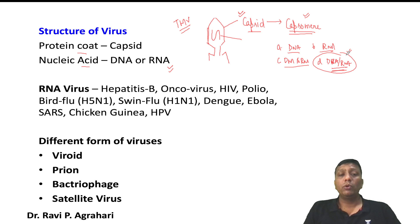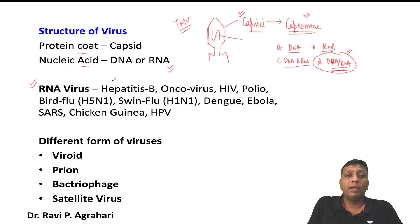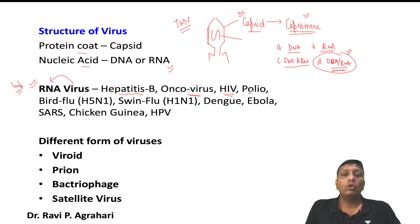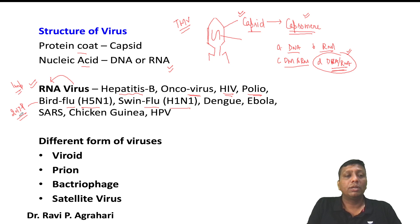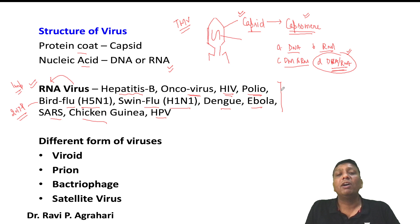Most dangerous viruses generally have RNA as their nucleic acid. For example, Hepatitis B, Oncovirus (cancer-causing virus), HIV, Poliomyelitis, Bird flu (strain H5N1), Swine flu (strain H1N1) — H5N1 was a prelims question around 2016-17. Also Dengue virus, Ebola virus, SARS virus, Chikungunya virus, and Human Papilloma Virus — all have RNA as their nucleic acid. RNA viruses are always very, very dangerous.